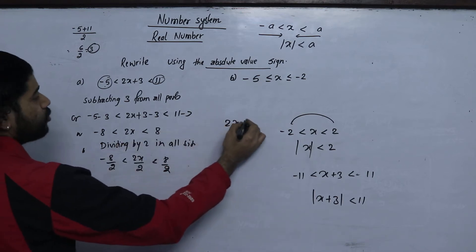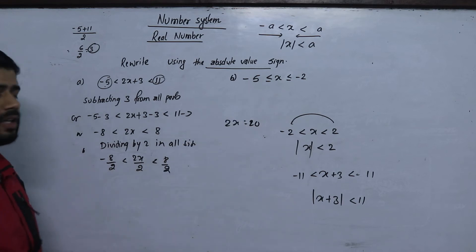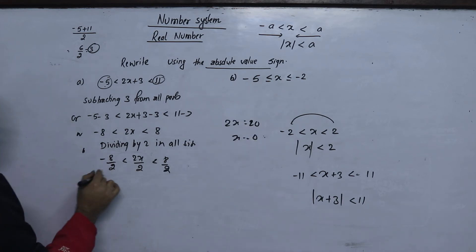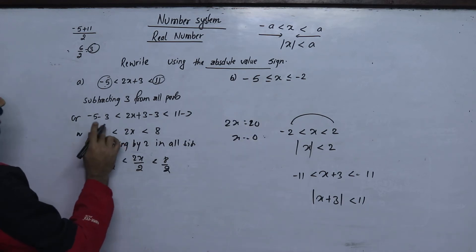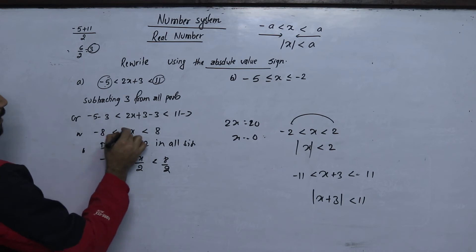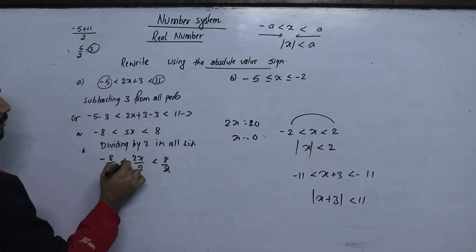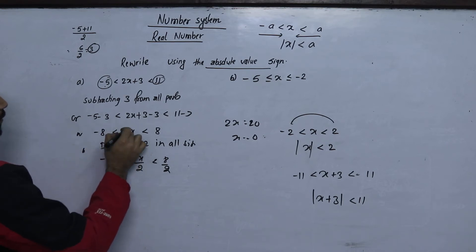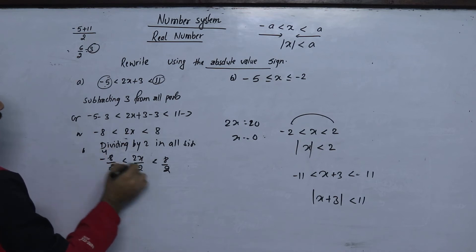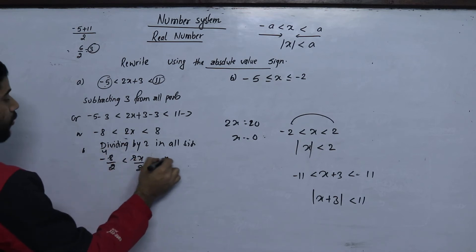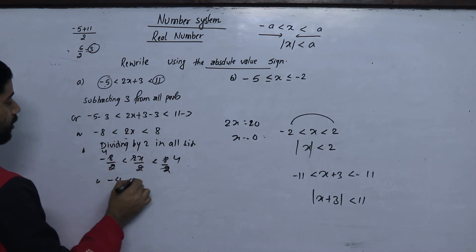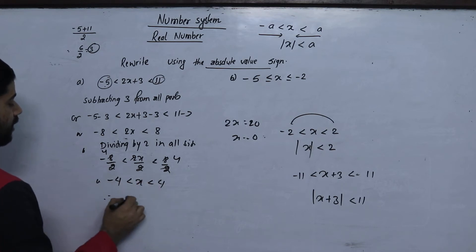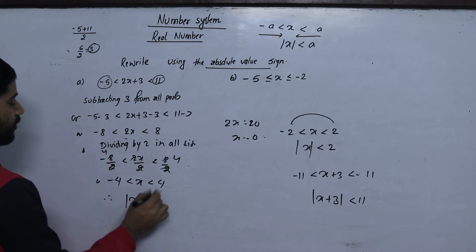Minus 8, 2x plus 8, minus 8 divided by 2, 2x divided by 2. 2x equals to 20, x equals to 10. Therefore modulus of x is less than 4.